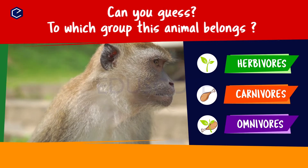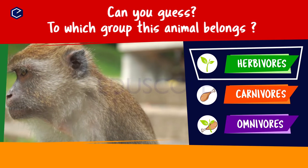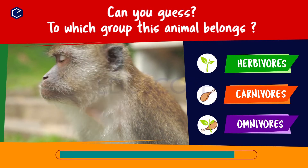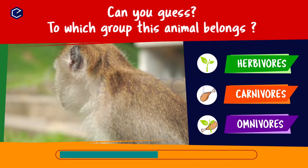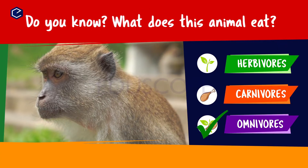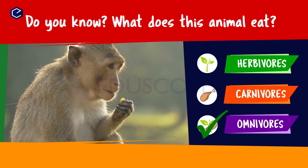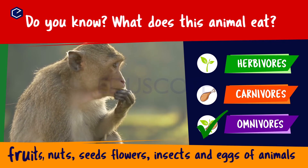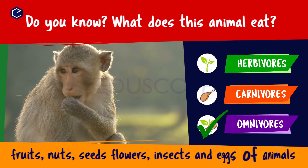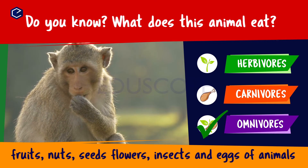Can you guess to which group this animal belongs? Herbivores, carnivores, omnivores. Do you know what this animal eats? A monkey eats fruits, nuts, seeds, flowers, insects and eggs of animals. So monkey is an omnivore.